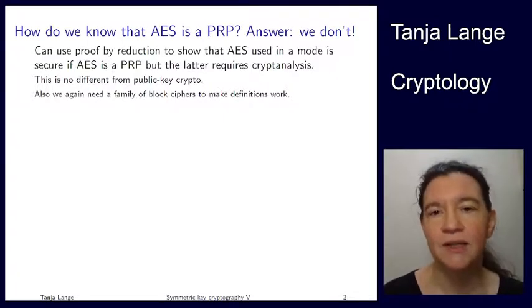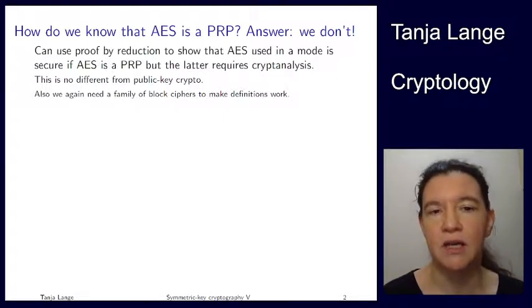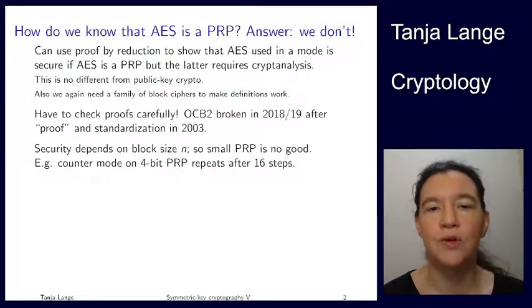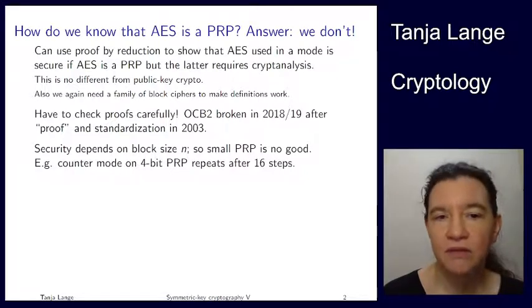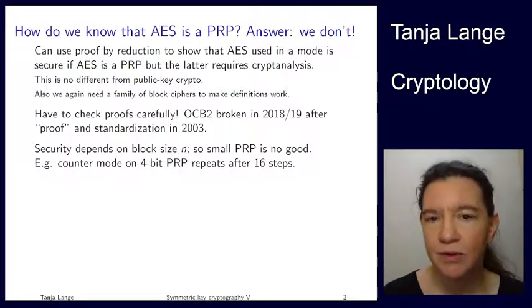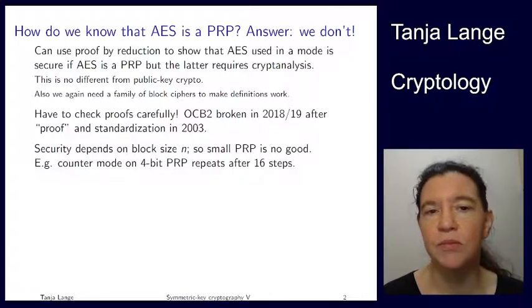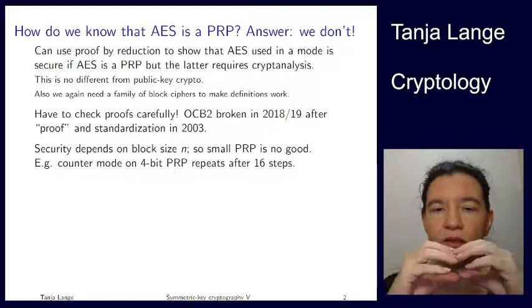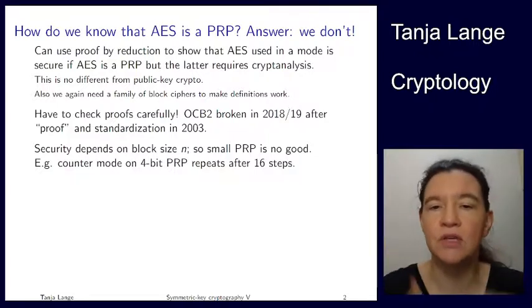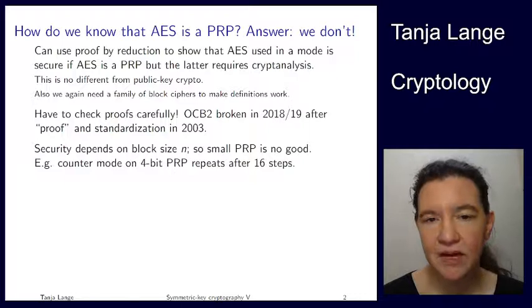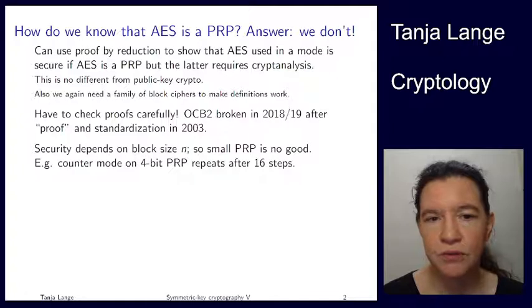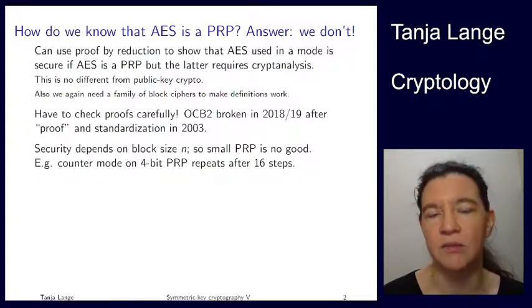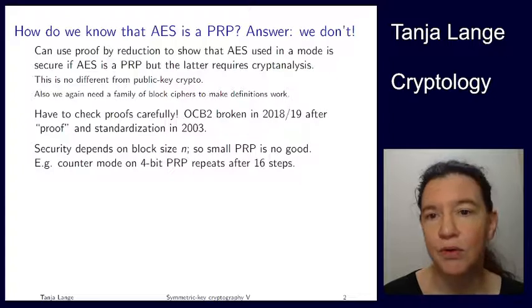Well, with these caveats, what I want to do in this lecture is give you an example of a block cipher which is small enough to go through the details. Also as a warning, when you're seeing proofs or statements like 'this is secure based on that', you have to be very careful and check the proofs. One famous example is OCB2, which is one of the modes. So something which assumes the block cipher is a PRP and afterwards should give you a secure encryption system for long messages. OCB2 was proposed and proven in 2003, standardized sometime later, and actually totally broken in 2018-19.